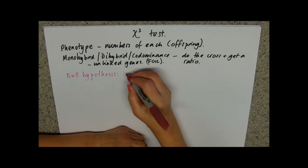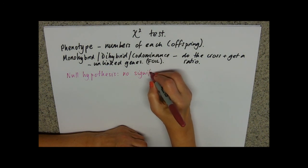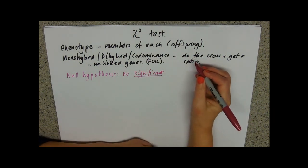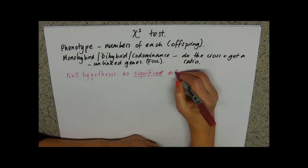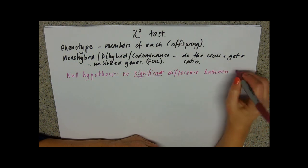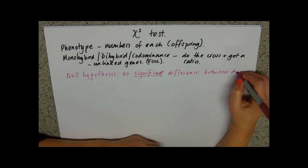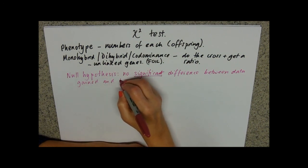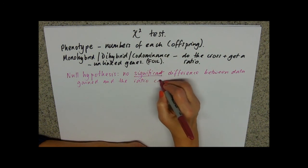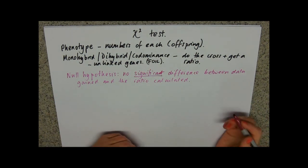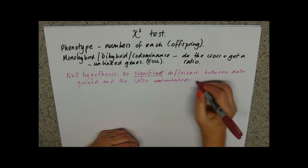Your null hypothesis is always that there is no significant difference. Because it's a statistical test, we have to use the word 'significant' — the differences in the data are not statistically significant. So: there is no significant difference between the observed data and the ratio derived from the cross.